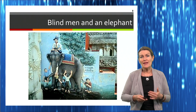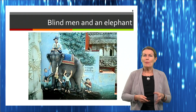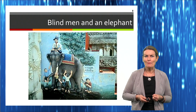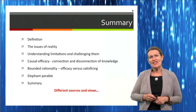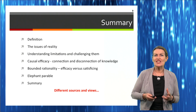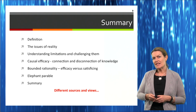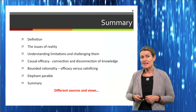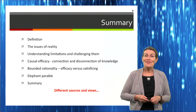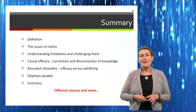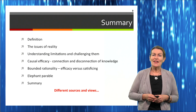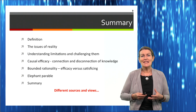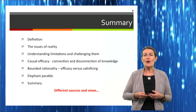When you're looking at bounded rationality and satisficing, perhaps we're just looking at the tail of the elephant, or just a leg — not the whole elephant. In summary, we've covered a definition and looked at the issues of reality: what we can change and what we can't change — understanding those limitations and challenging them, looking for opportunities and potential. We've had a brief look at causal efficacy and bounded rationality, and applied the elephant parable to illustrate different sources and different views. The more we can approach non-routine problems through those different sources, the better we can optimize our problem solving.